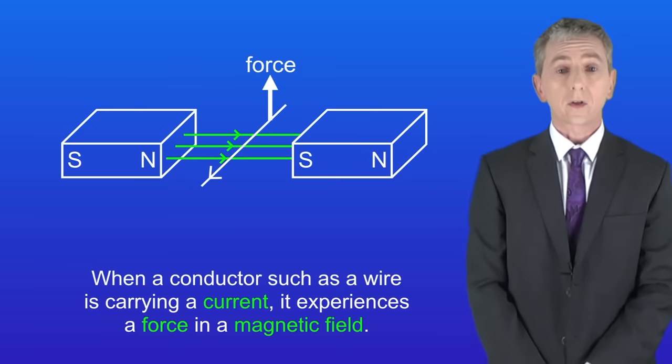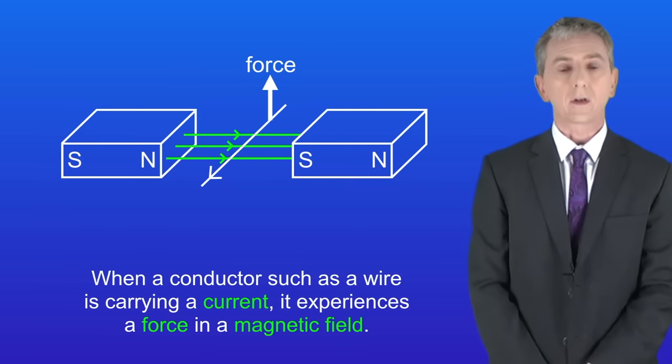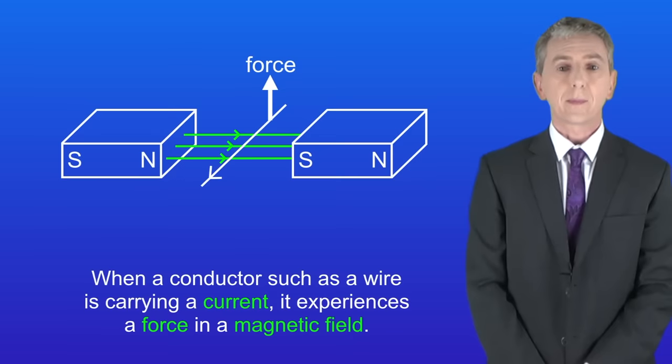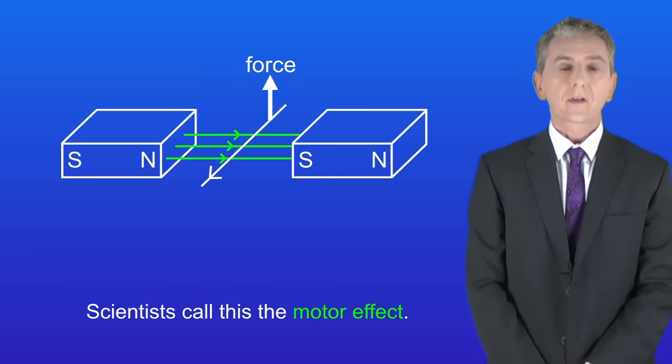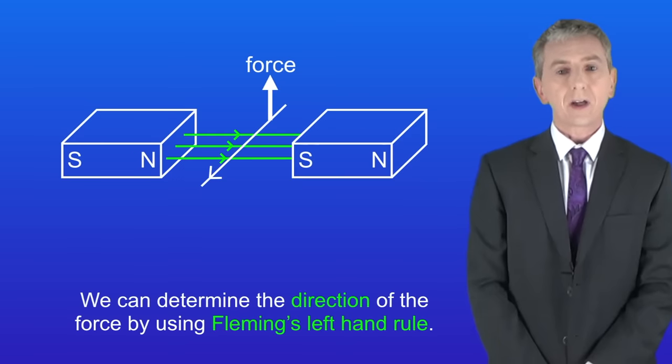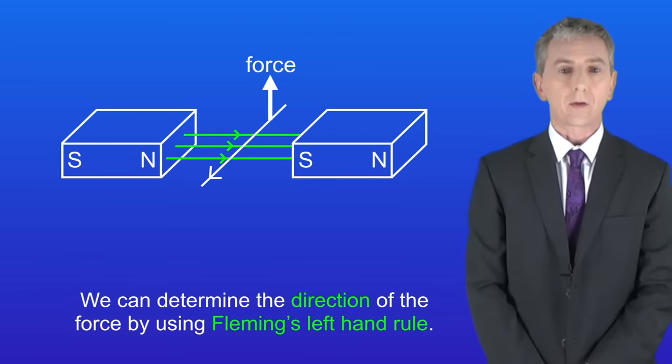In the last video we saw that when a conductor, such as a wire, is carrying a current, it experiences a force in a magnetic field. Scientists call this the motor effect. Remember that we can determine the direction of the force by using Fleming's left hand rule.